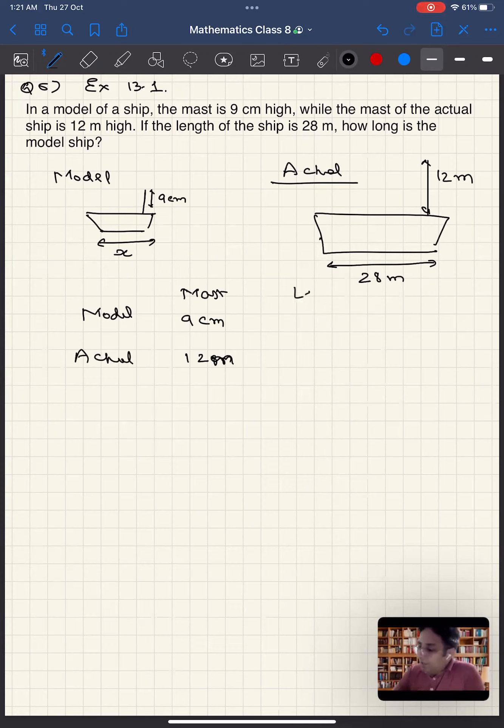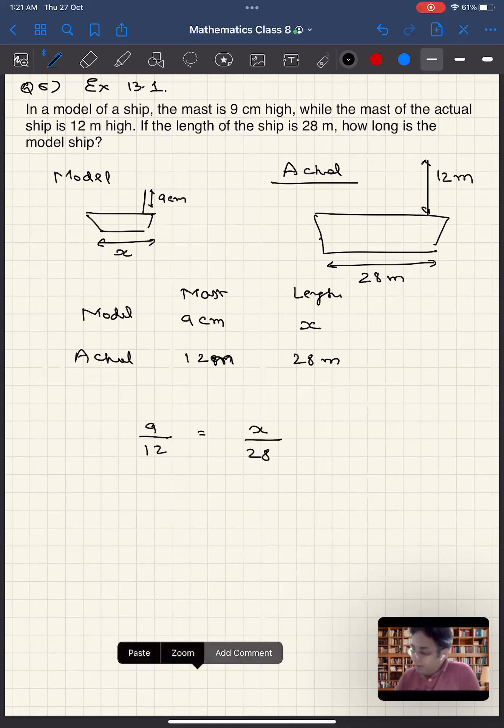And length of the ship when it is 28 meters, in the model, what would have been the length of the ship? So let's use this proportion: 9 by 12 is equal to x by 28. So x is equal to 28 into 9 divided by 12.